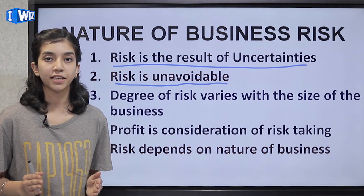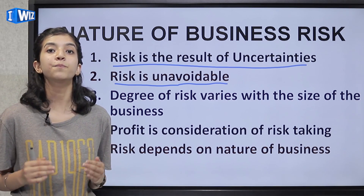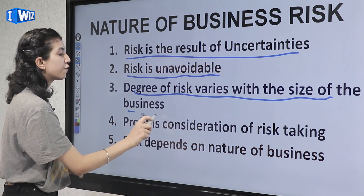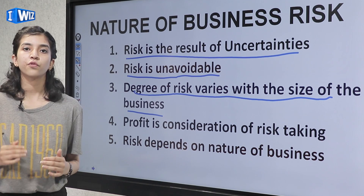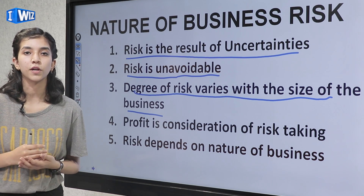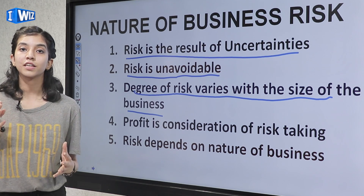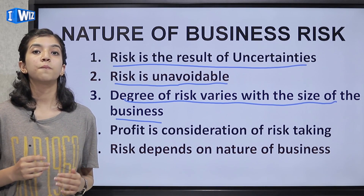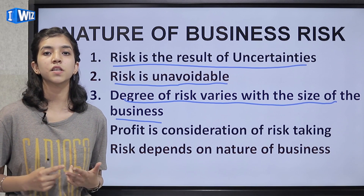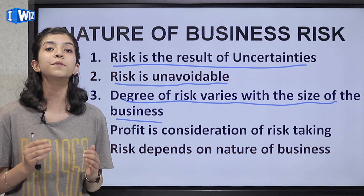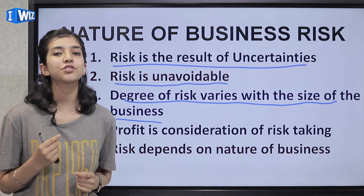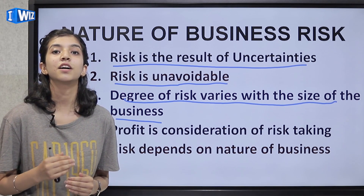All a businessman can do is be prepared to fight the circumstances and protect his business. The third is that the degree of risk varies with the size of business — a small-scale business has a smaller risk factor, whereas a large-scale business has a larger risk factor. Also, when a business deals in regular commodities like dal, pulses, or salt, the risk factor is less, because people will always buy those products. On the other hand, if it is a fashion-related business, trends change very quickly, which can cause a risk of unsold items.